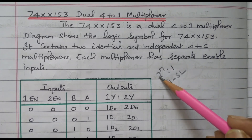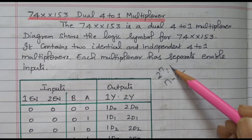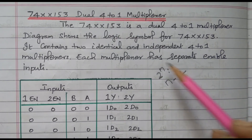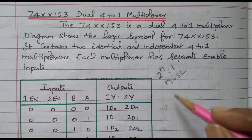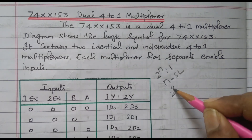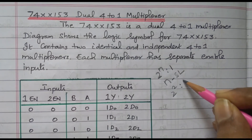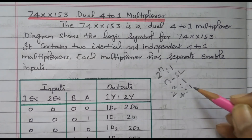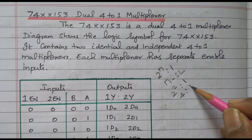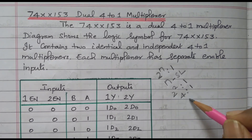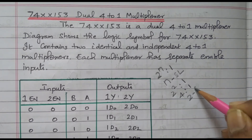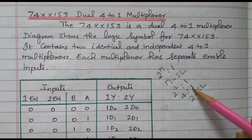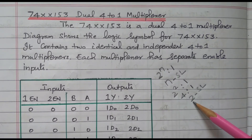Out of 2 to the power n inputs, only 1 output is available, and that is decided by the selection lines. For 4 to 1, n is equal to 2, so 2 to the power 2 is 4 — that is 4 inputs and only 1 output, with 2 selection lines available.